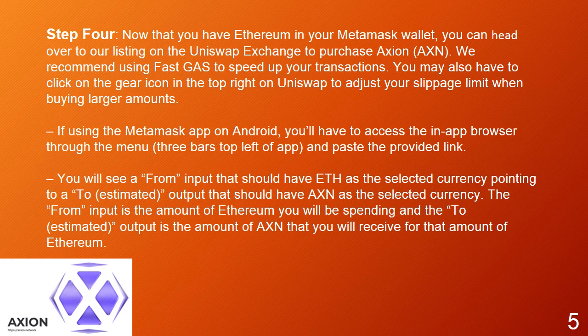If using the Metamask app on Android, you'll have to access the in-app browser through the menu (three bars, top left of app) and paste the provided link. You will see a 'from' input that should have ETH as the selected currency, pointing to an estimated output that should have AXN as the selected currency. The 'from' input is the amount of Ethereum you will be spending, and the 'to' estimated output is the amount of AXN that you will receive for that amount of Ethereum.